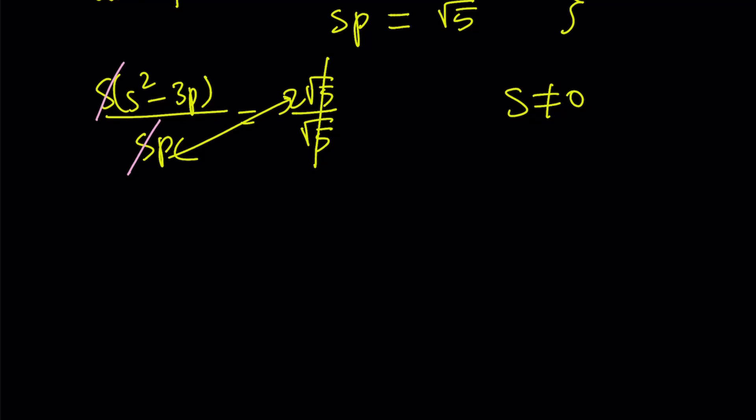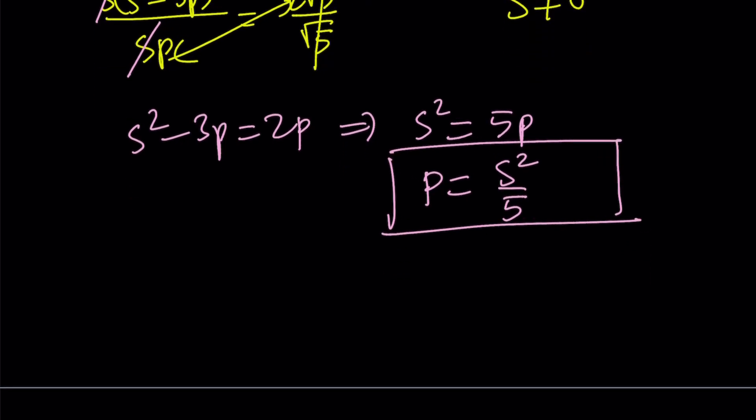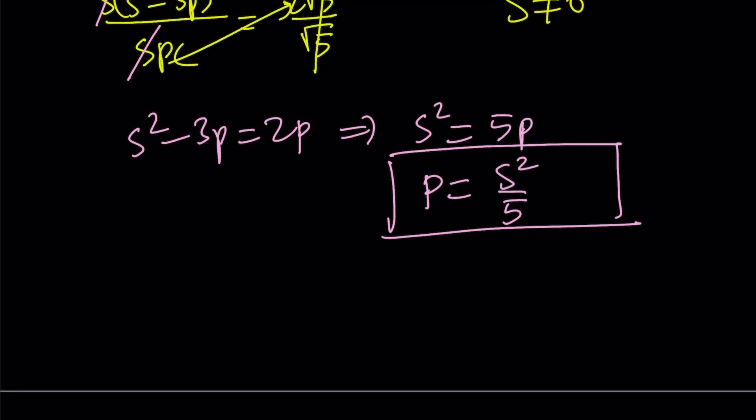That's going to simplify the process. So now we have s² - 3p = 2p. And now we can add 3p to both sides, which gives us s² = 5p. Let's isolate p and write it as s²/5. So we were able to write the product in terms of the sum. And guess what we're going to do with that?